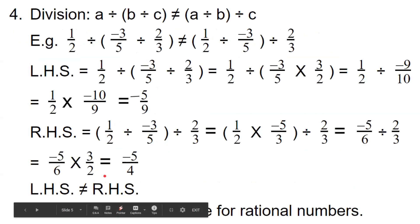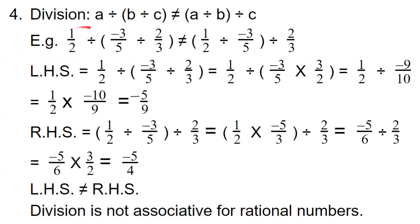Now let us discuss the fourth operation, which is division. That is: A divided by (B divided by C) is not equal to (A divided by B) divided by C. If you divide the rational number by changing the bracket, we do not get the same answer. We can verify it with the help of an example: 1/2 divided by (minus 3/5 divided by 2/3) is not equal to (1/2 divided by minus 3/5) divided by 2/3. We will take LHS and RHS separately and simplify.